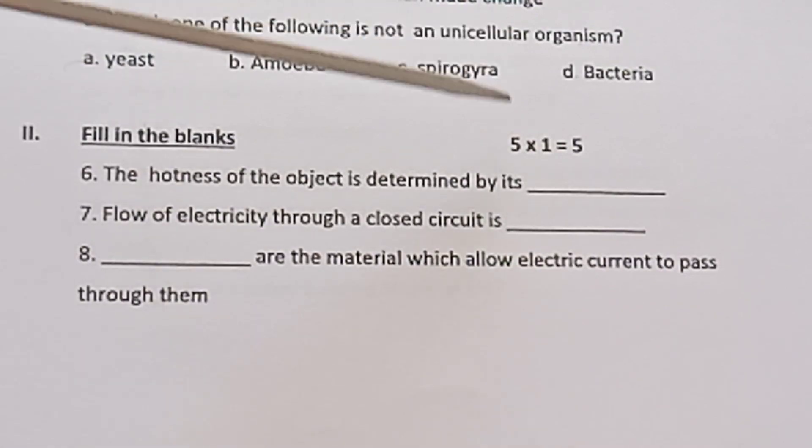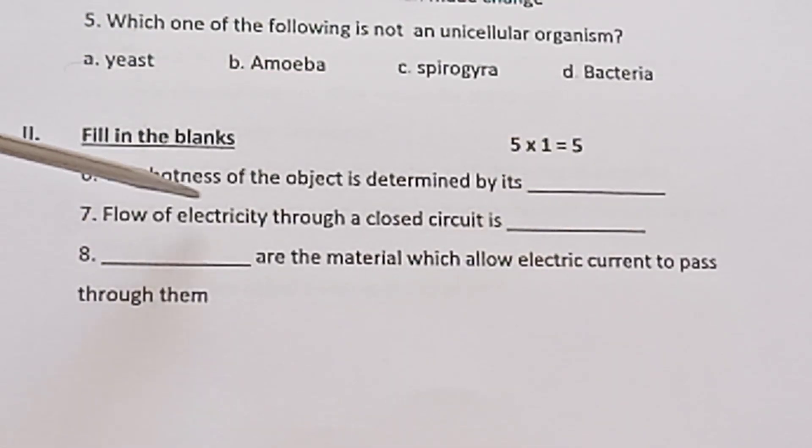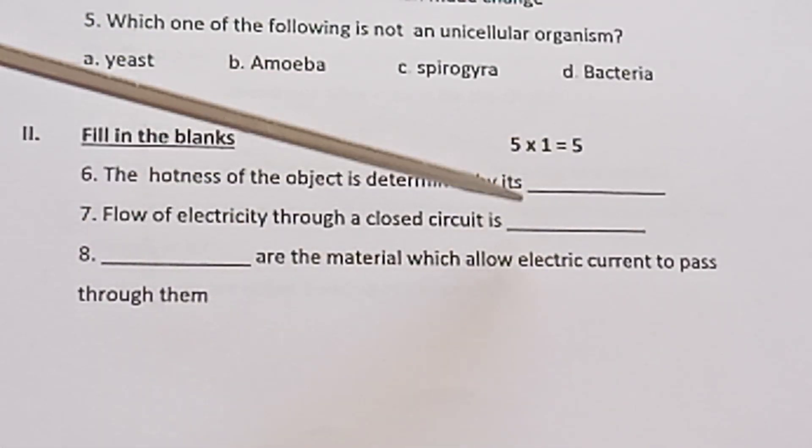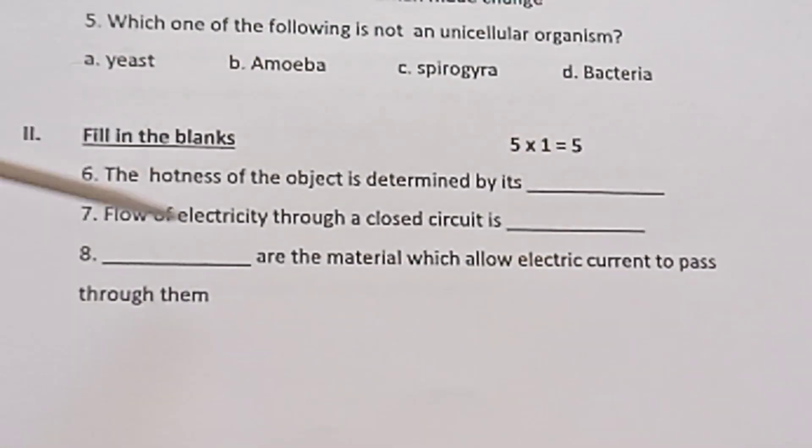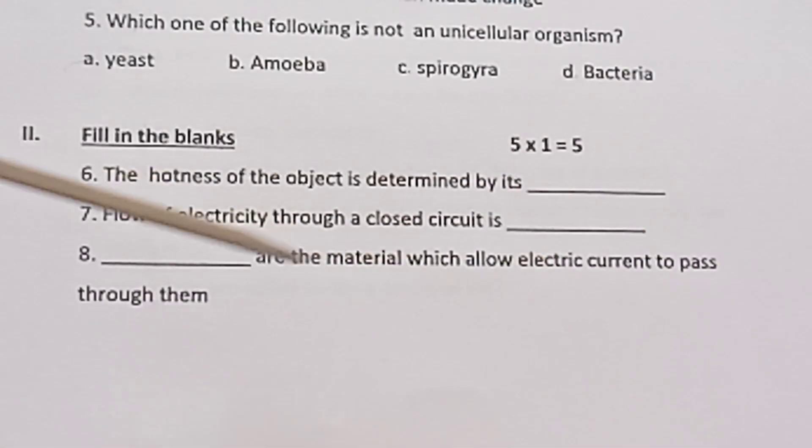Section II: Fill in the blanks. 5 × 1 = 5. Question 6: The hardness of an object is determined by its ___. Question 7: Flow of electricity through a closed circuit is ___. Question 8: ___ are the materials which allow electric current to pass through them.